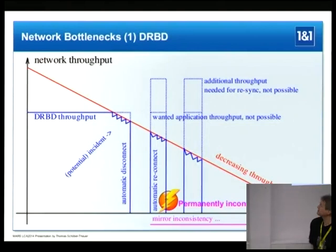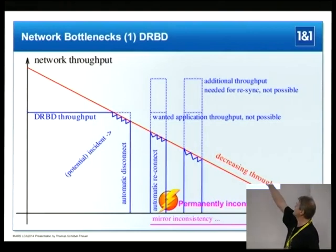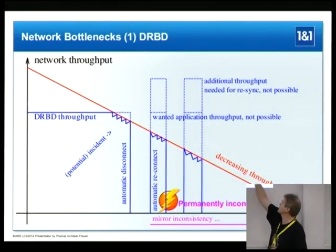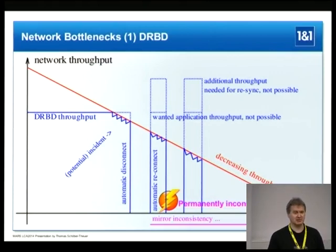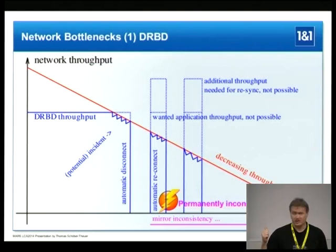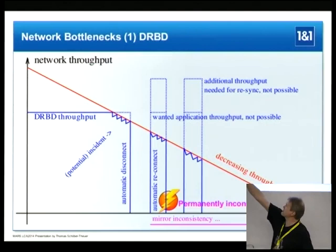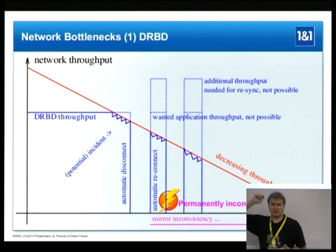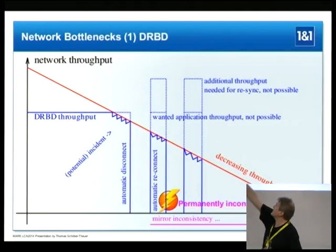Here's an example of DRBD problems. I assume the network has a problem, modeled by a throughput limit that's just decreasing, and the application load is constant, just for this example. At the beginning it's no problem to match your application throughput to the network.